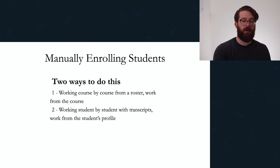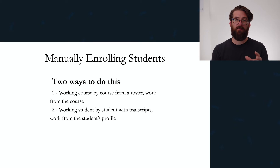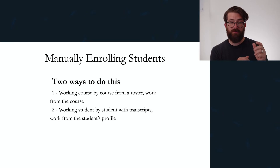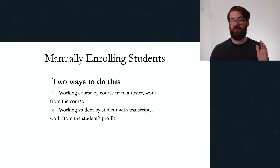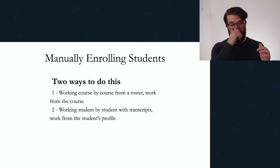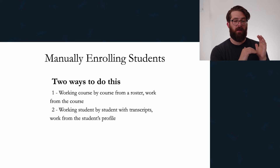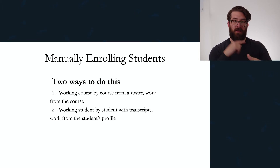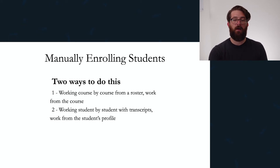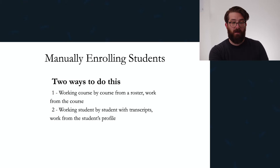We're going to circle back to manual enrollment real quick because unfortunately there's another kind of hiccup there. There are a couple different ways of manually enrolling students. You can go course by course from a roster, or you can go student by student — for example, if you have a bunch of student transcripts and you're trying to get those into the system, working from a student's profile and adding each course. For simplicity's sake, we're going to talk through the course-by-course roster method.